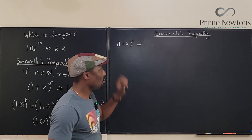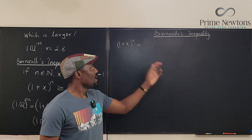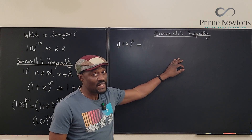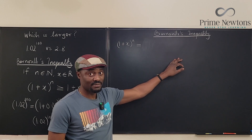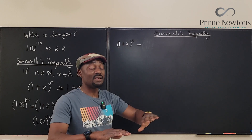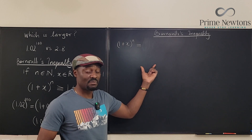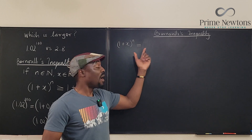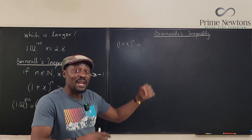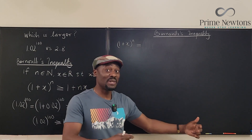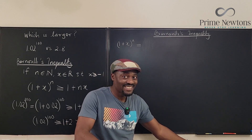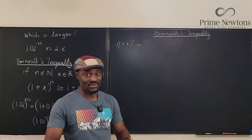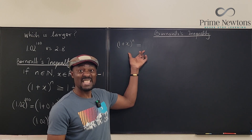The binomial expansion formula was not invented by Johann Bernoulli. The generalized form was invented by Sir Isaac Newton — give him the respect he deserves. However, the binomial distribution used in probability and statistics was invented by Johann Bernoulli. Don't mix them up: we are using the binomial expansion, not the binomial distribution.